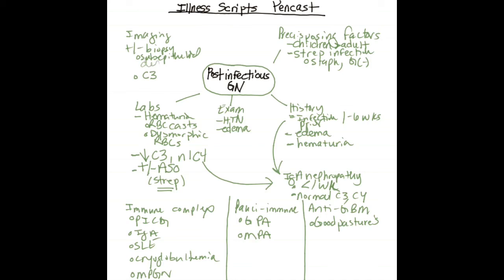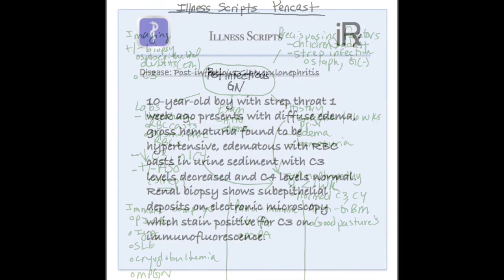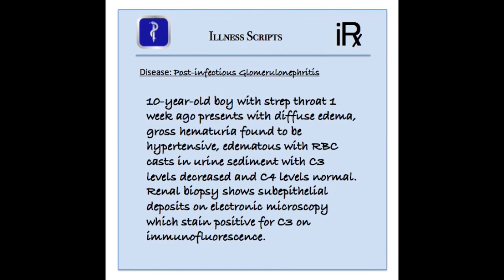Thus, an ideal illness script for post-infectious GN would read: a 10-year-old boy with strep throat one week ago presents with diffuse edema, gross hematuria, found to be hypertensive, edematous with RBC casts and dysmorphic RBCs in the urine sediment, with serum C3 levels decreased, C4 levels normal. Renal biopsy shows sub-epithelial deposits on electron microscopy, which will stain positive for C3 on immunofluorescence.